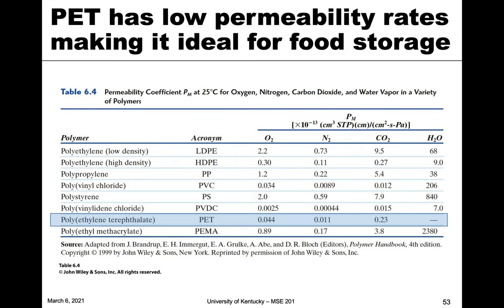Here's a table of various polymers and their permeability coefficients — the equivalent to the diffusion coefficient. The bigger the number, the more diffusion or permeability that occurs. We have various polymer materials and the various gases: O2, N2, CO2, and H2O — common things you might want to either keep out or allow to diffuse through a polymer.